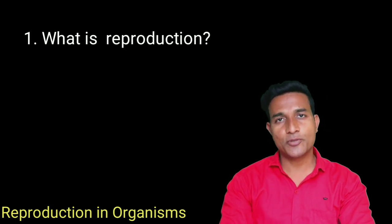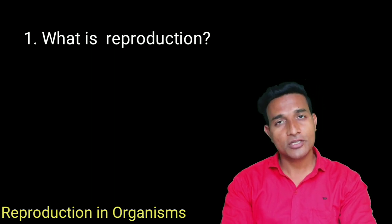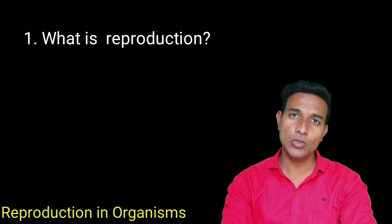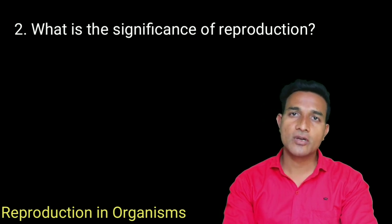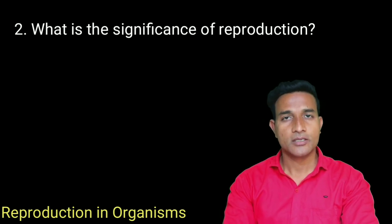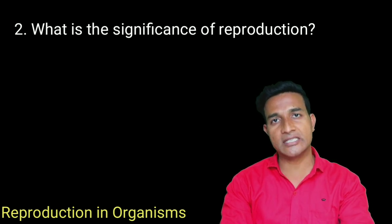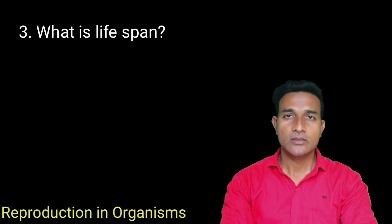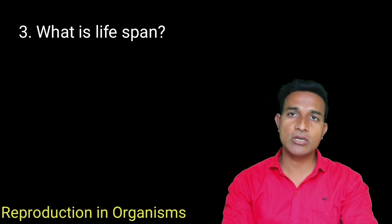What is reproduction? Reproduction is a biological process in which organisms give rise to young ones similar to itself. What is the significance of reproduction? It enables the continuity of the species from generation to generation. What is lifespan? The period from birth to natural death is called lifespan.